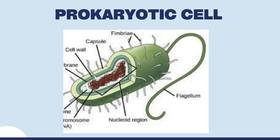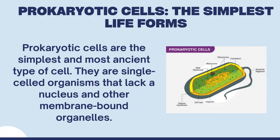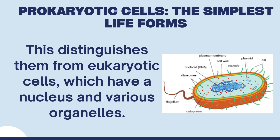Prokaryotic cells: the simplest life forms. Prokaryotic cells are the simplest and most ancient type of cell. They are single-celled organisms that lack a nucleus and other membrane-bound organelles. This distinguishes them from eukaryotic cells, which have a nucleus and various organelles.